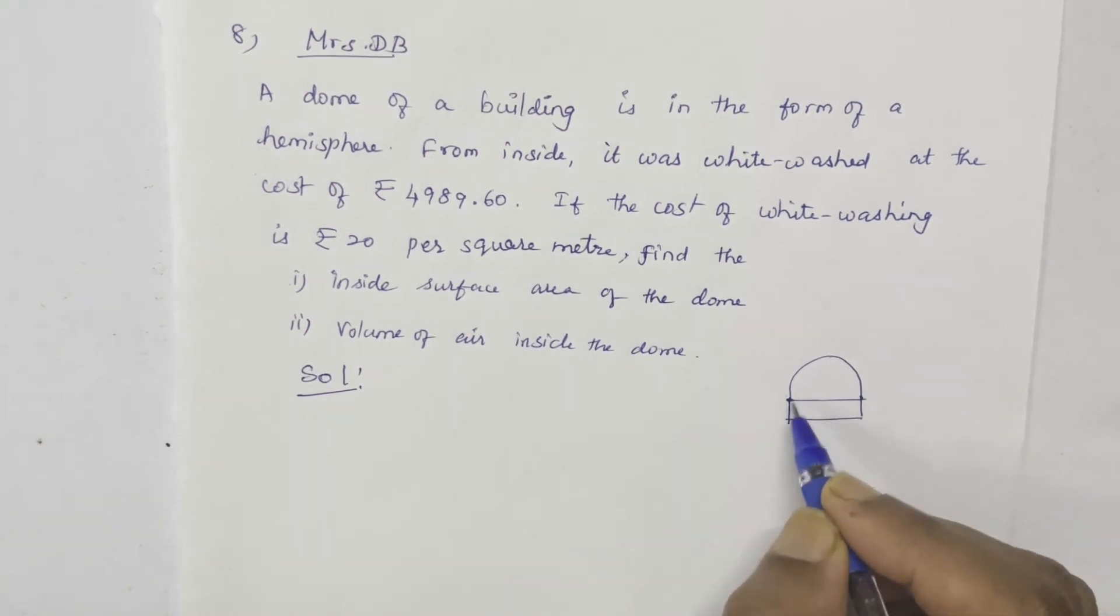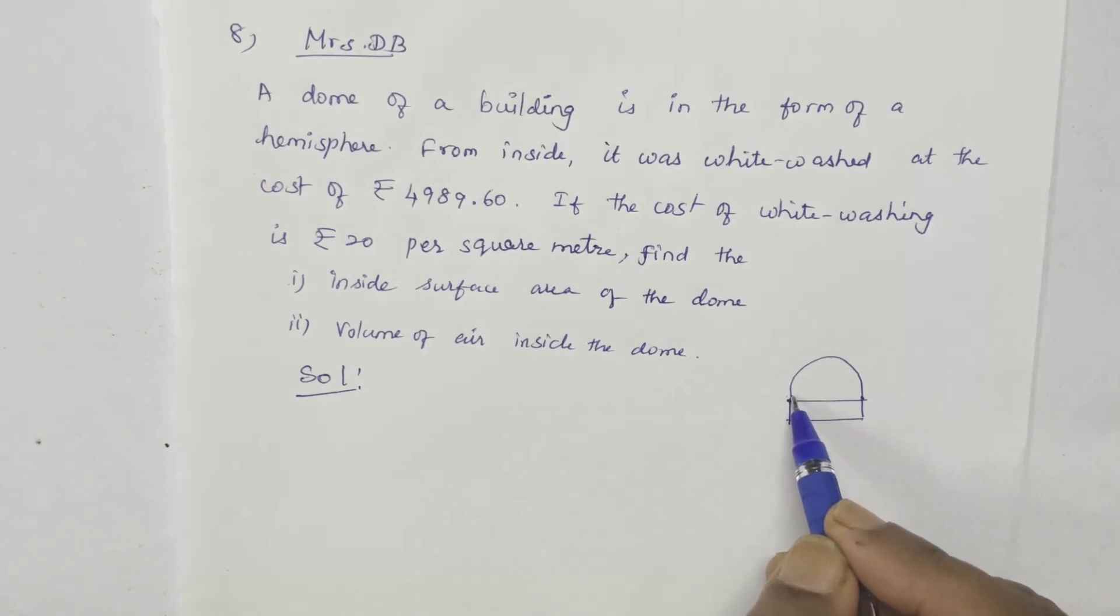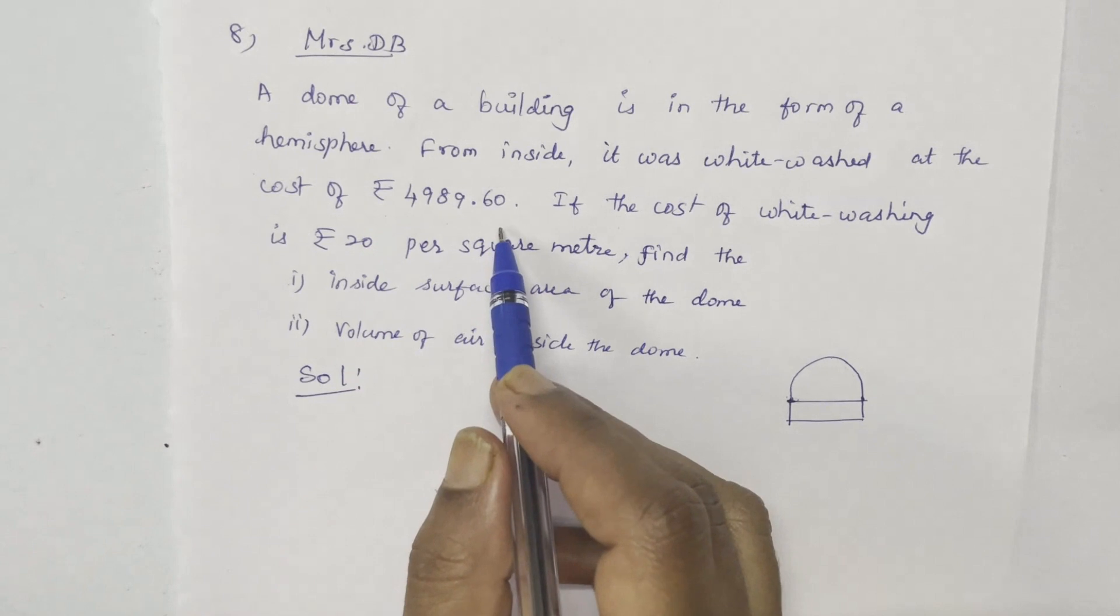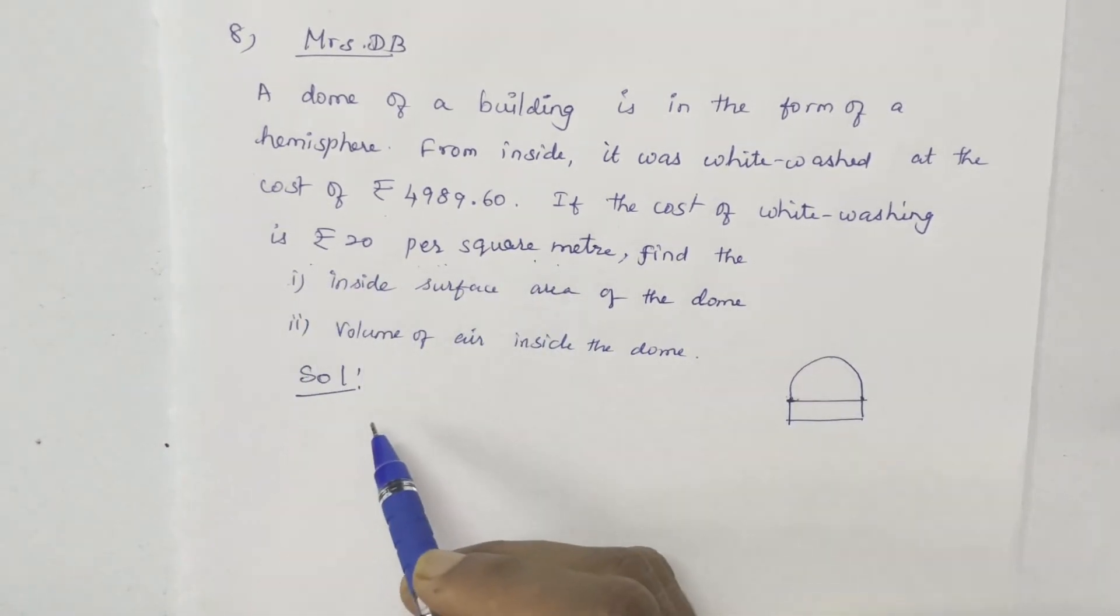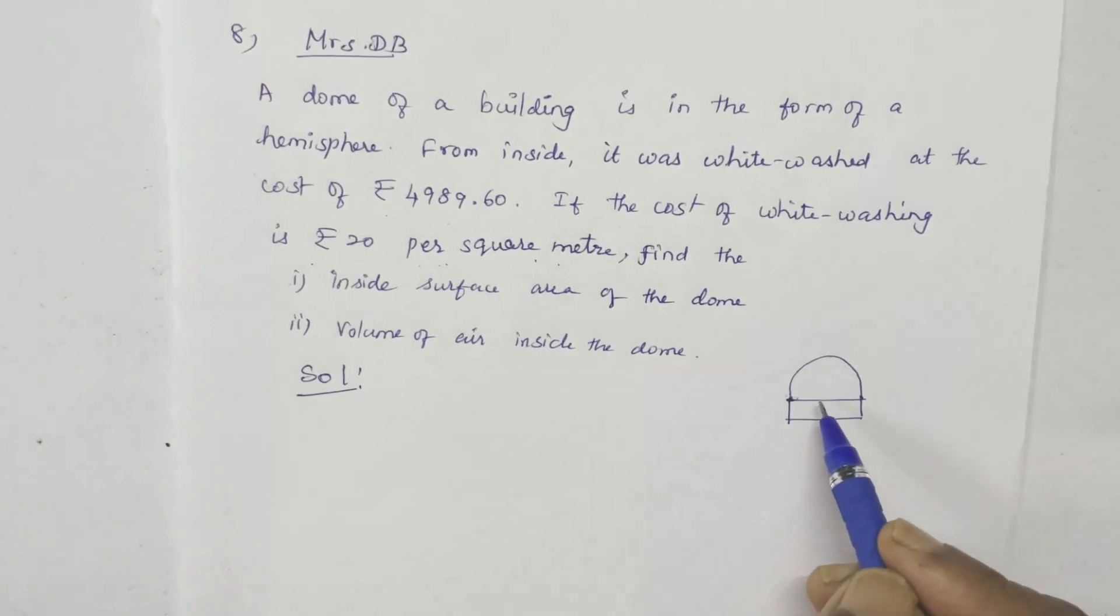So here is a dome in the hemisphere shape. If you are doing whitewash in the inner part, so this dome is whitewashed. The total cost is 4989.60. If you charge rupees 20 per square meter for painting, you need to find the surface area and the volume of air inside the dome.